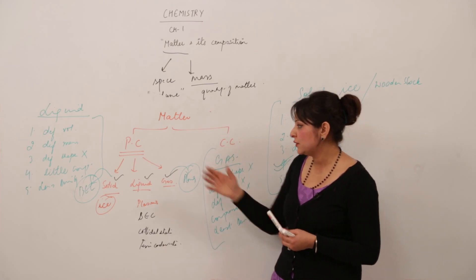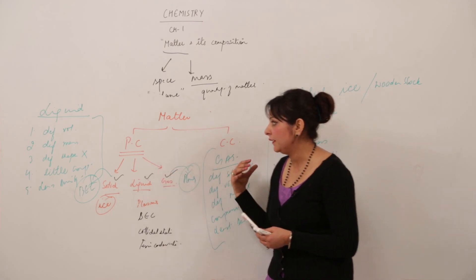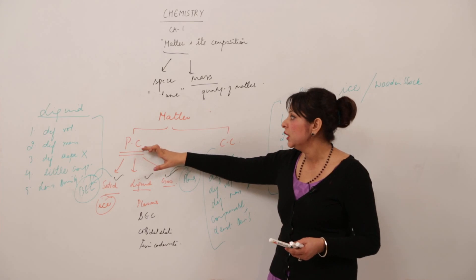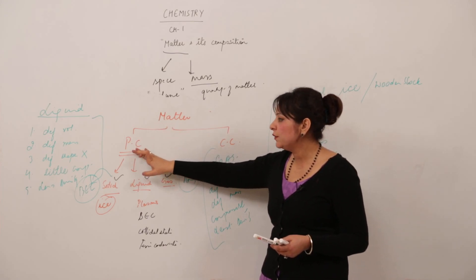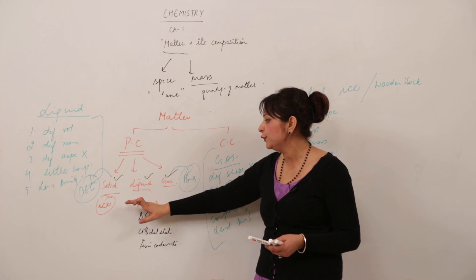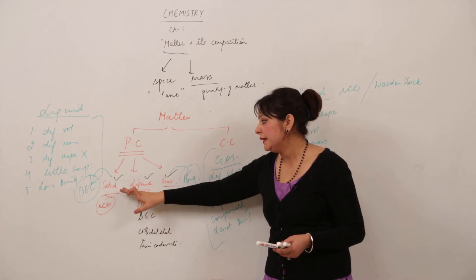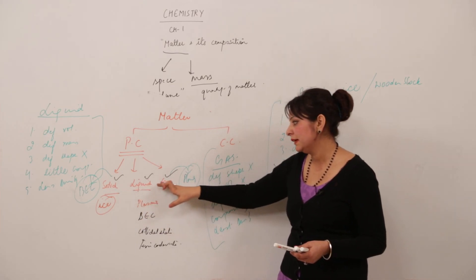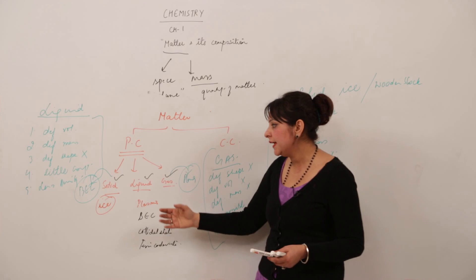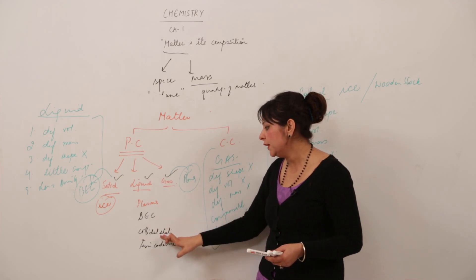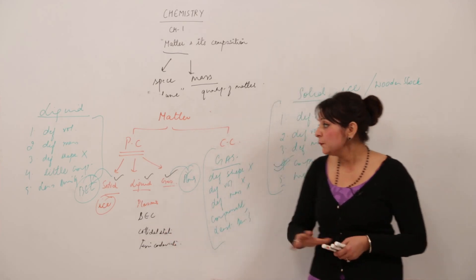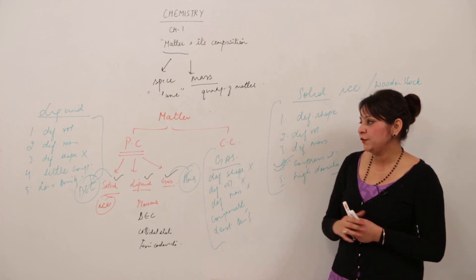So these are the states of matter classified on the basis of physical classification: solid, liquid, gas — with the properties already discussed — and the other states are plasma, BEC, colloidal, and fermionic condensate. These are all part of the physical classification of matter.